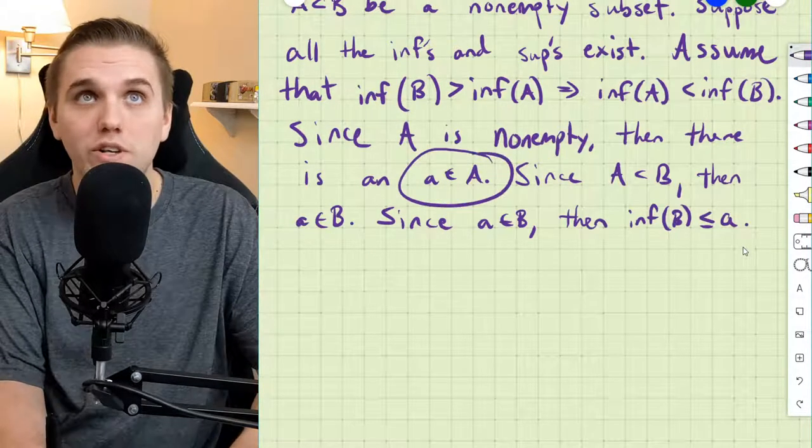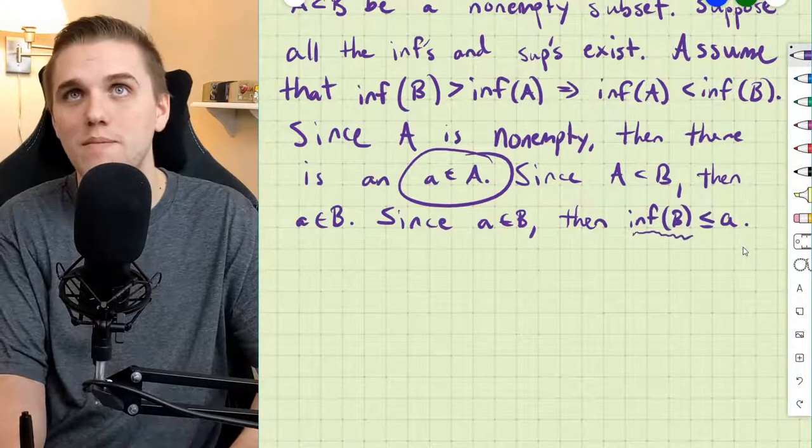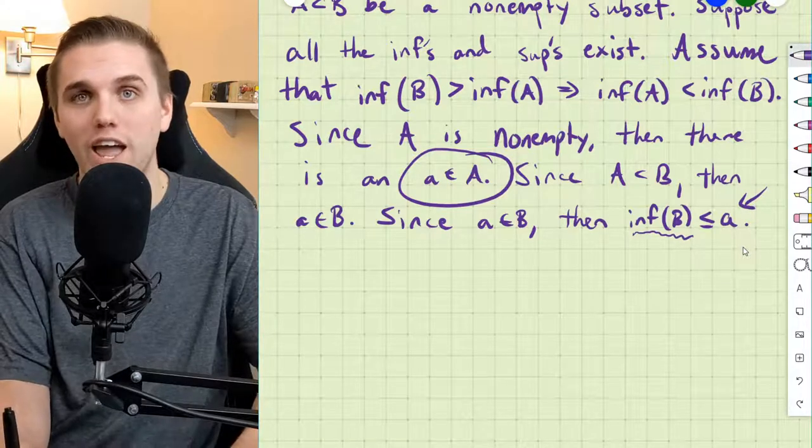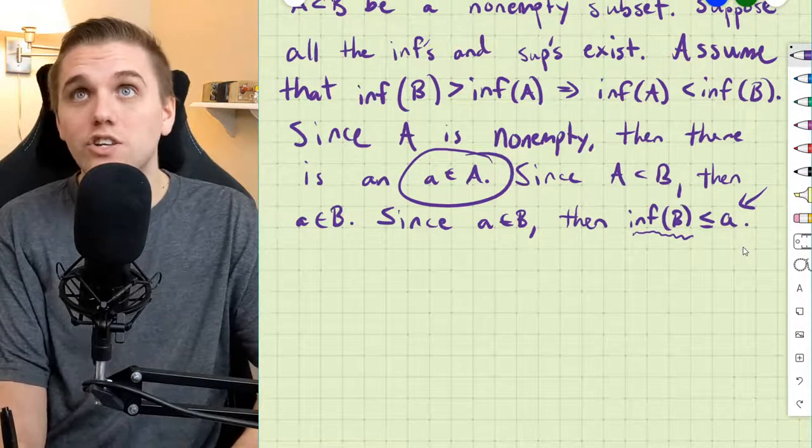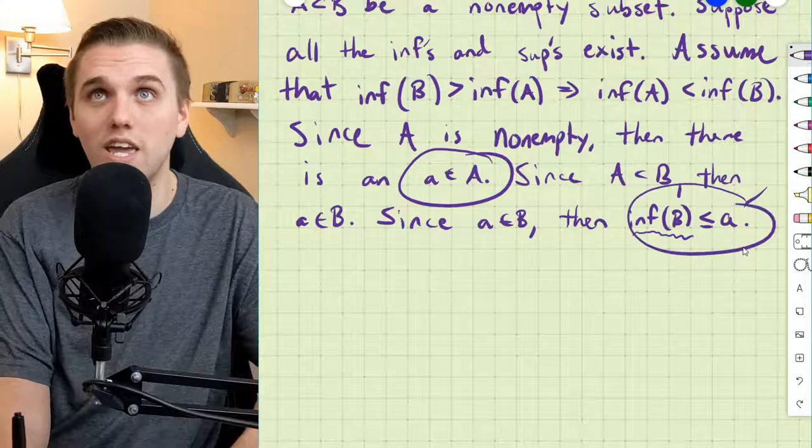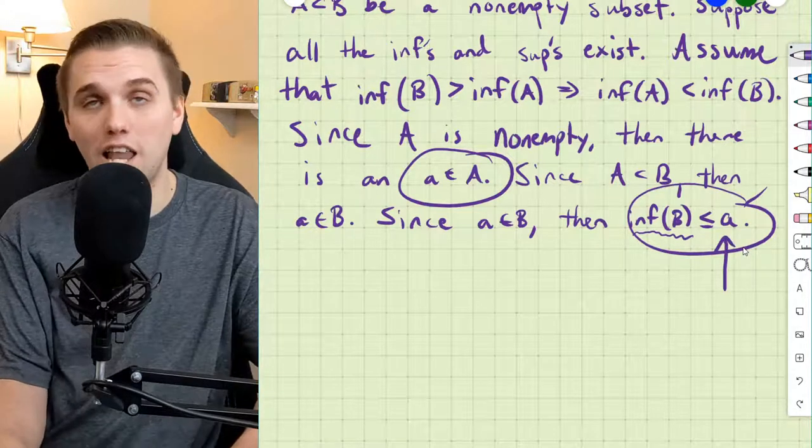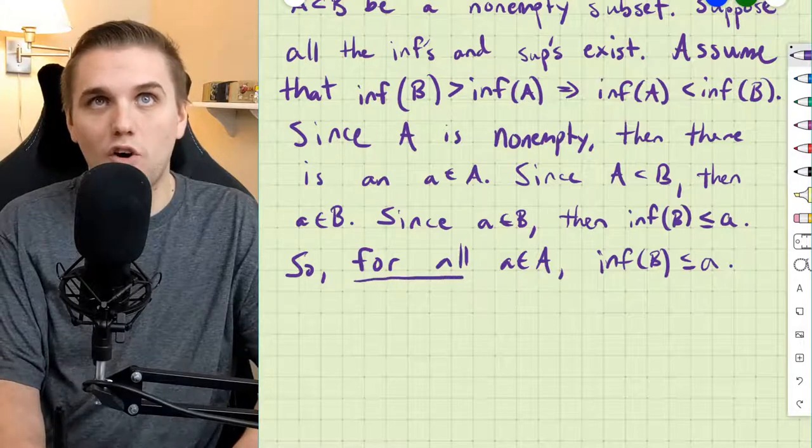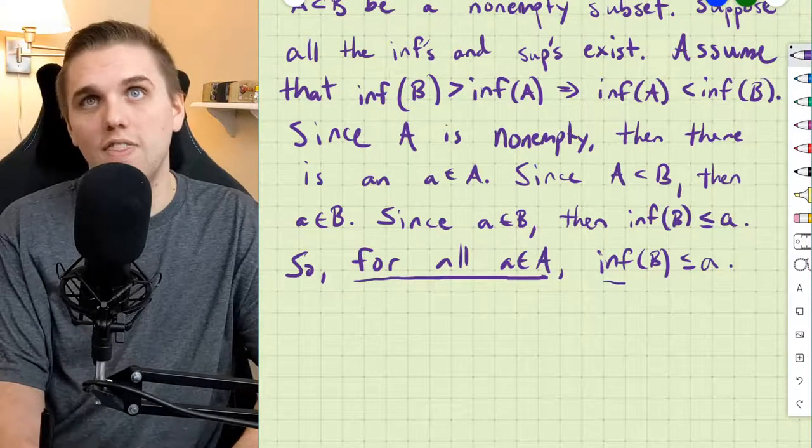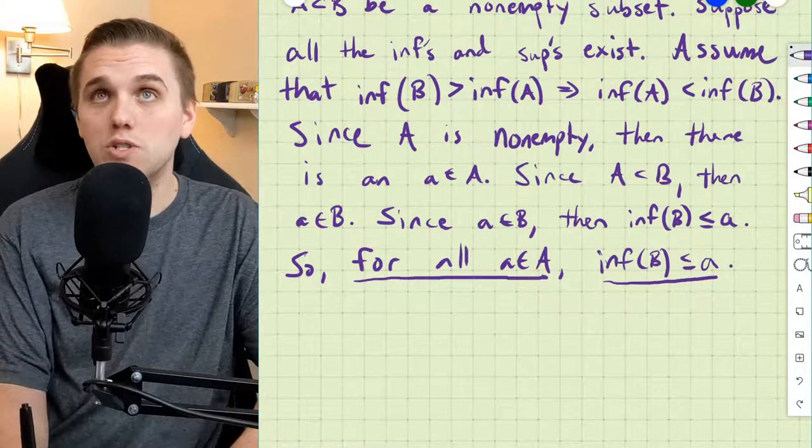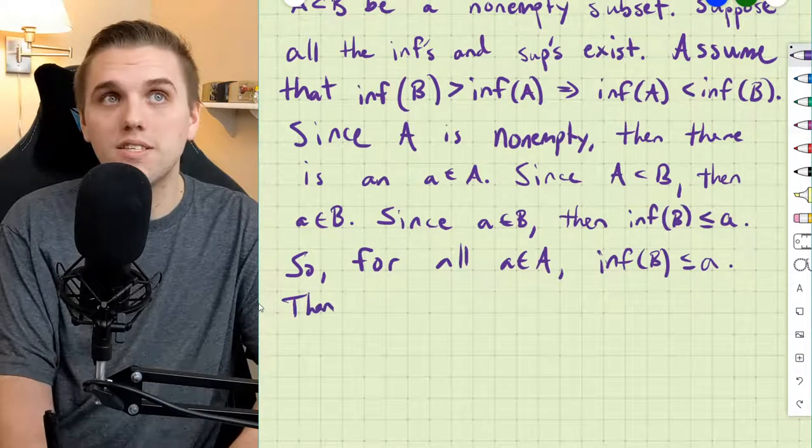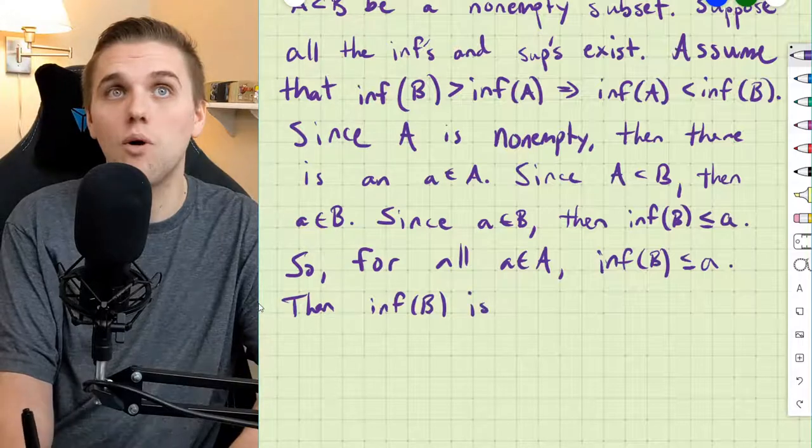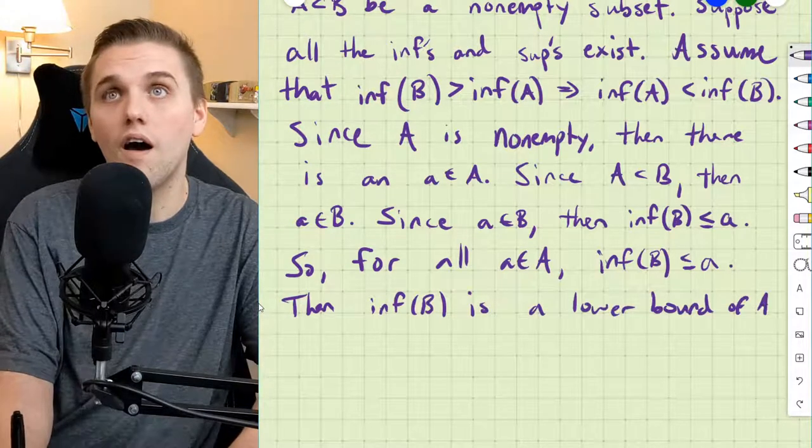Now, I picked an arbitrary element in A here and showed that the infimum of B is less than or equal to that arbitrary element that I picked from A. So this statement right here is true for every element in A that I pick. So to clarify, that means for all elements in A, the infimum of B is less than or equal to A. Well, that means that the infimum of B is a lower bound of A.